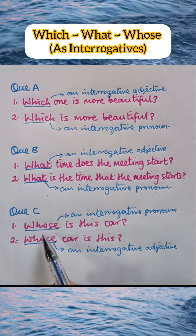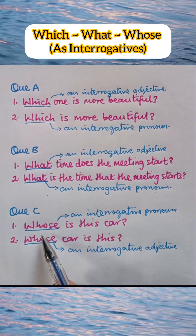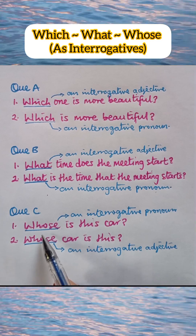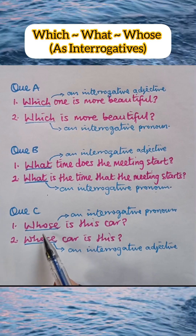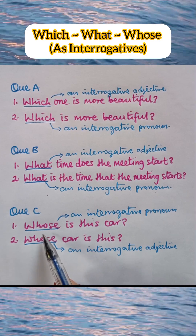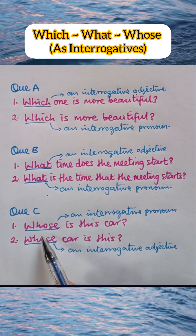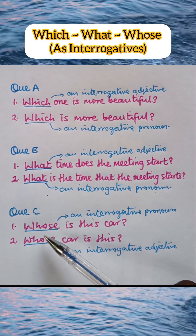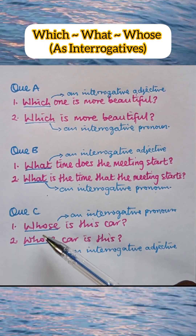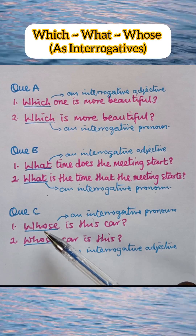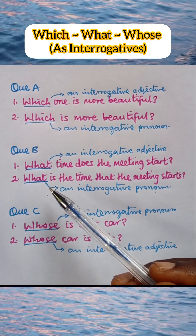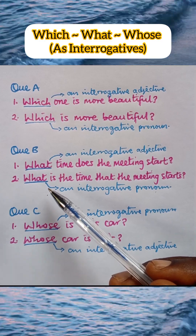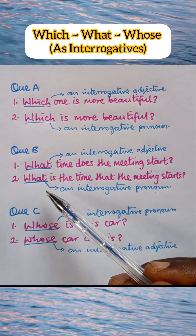Please note that 'whose' here, besides being an interrogative word, is also a possessive word. In which case, the 'whose' in number 1 is a possessive pronoun, while the 'whose' in number 2 is a possessive adjective. Now, here is your exercise: choose any one of 'which,' 'what,' and 'whose.' Whichever you choose, use it to make two sentences — one where it functions as an interrogative adjective, and the other where it functions as an interrogative pronoun. Leave your answer in the comment section. Thank you very much for watching.